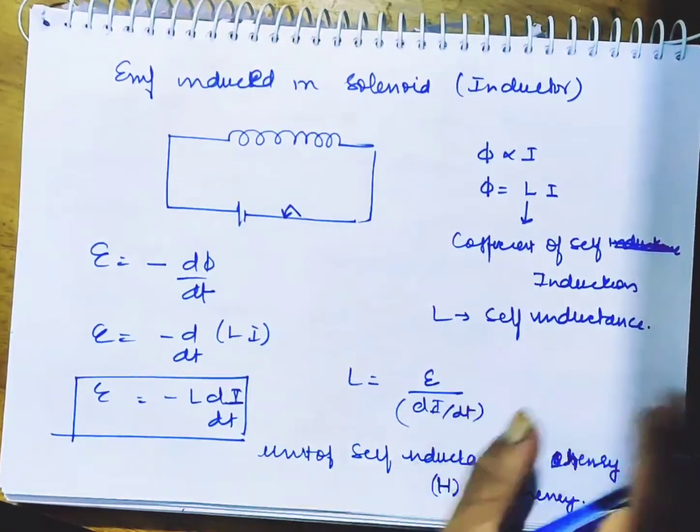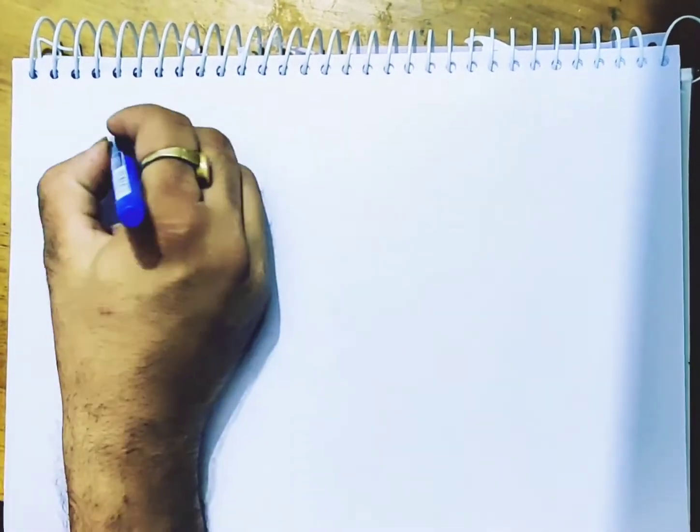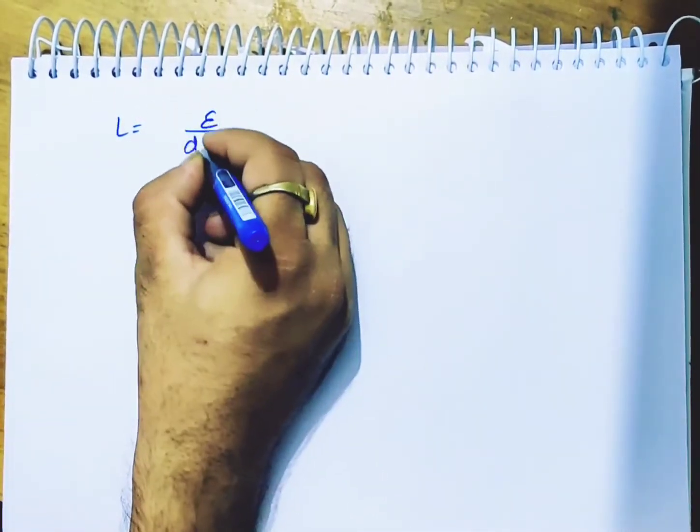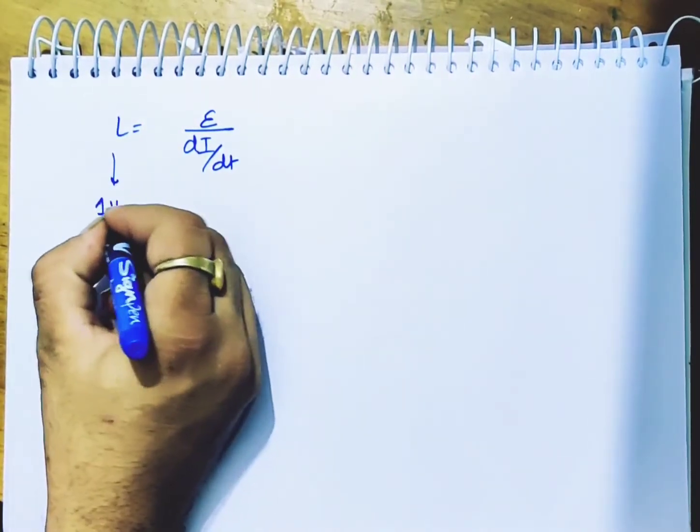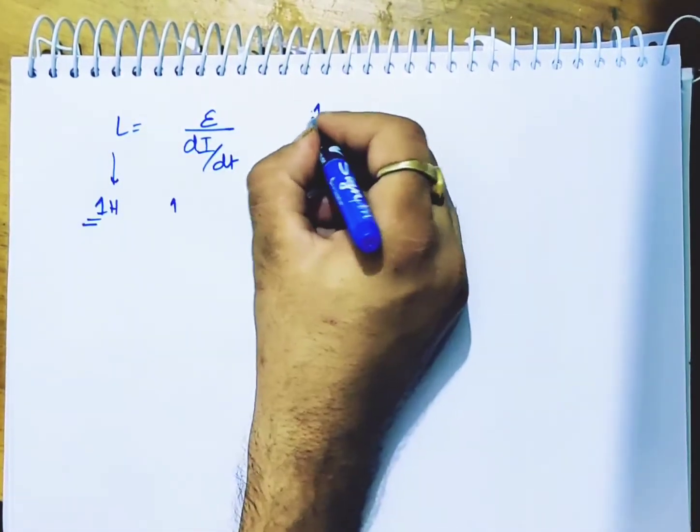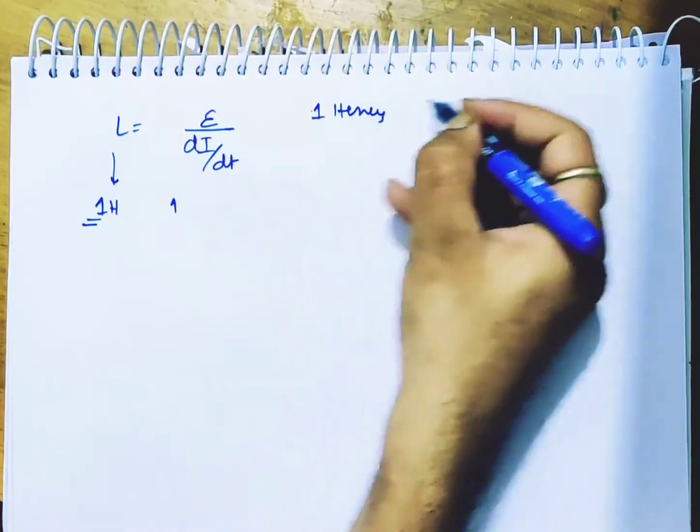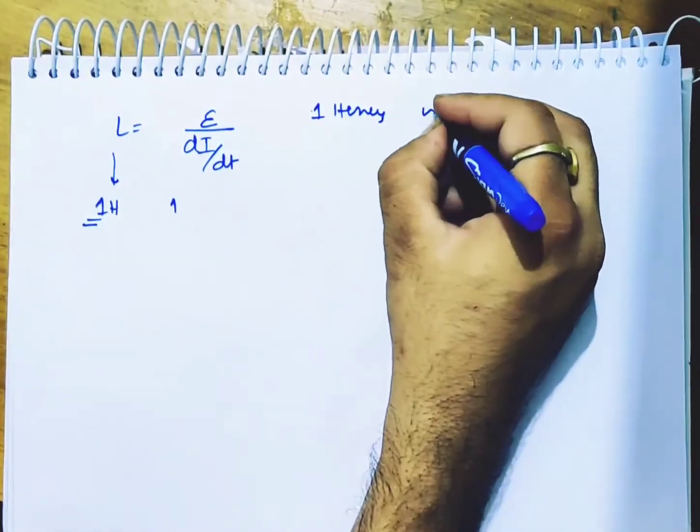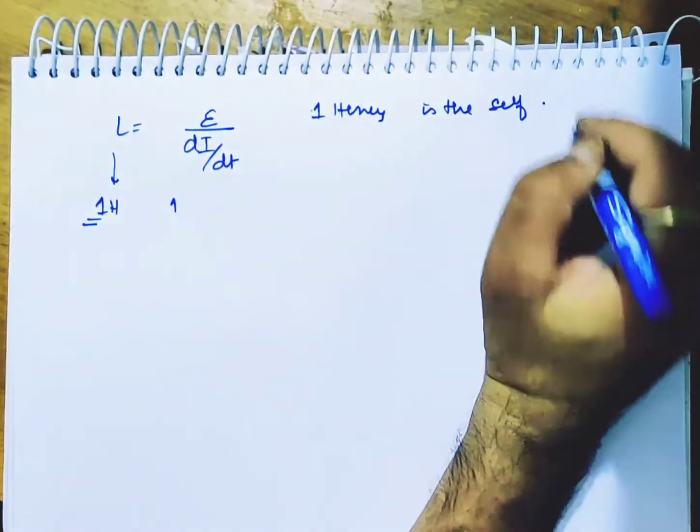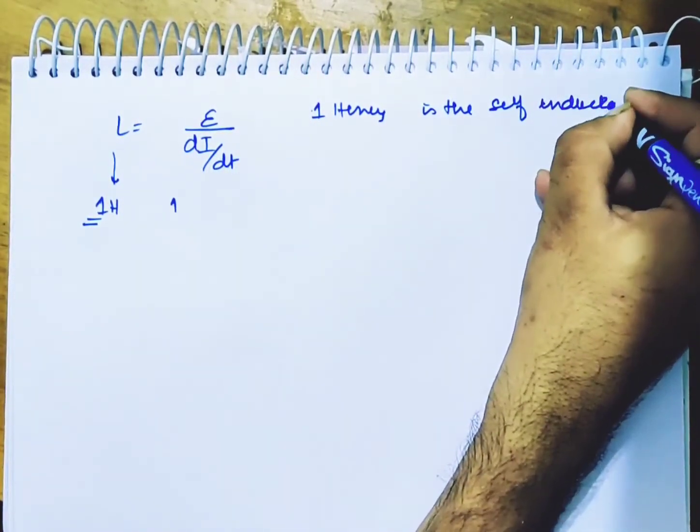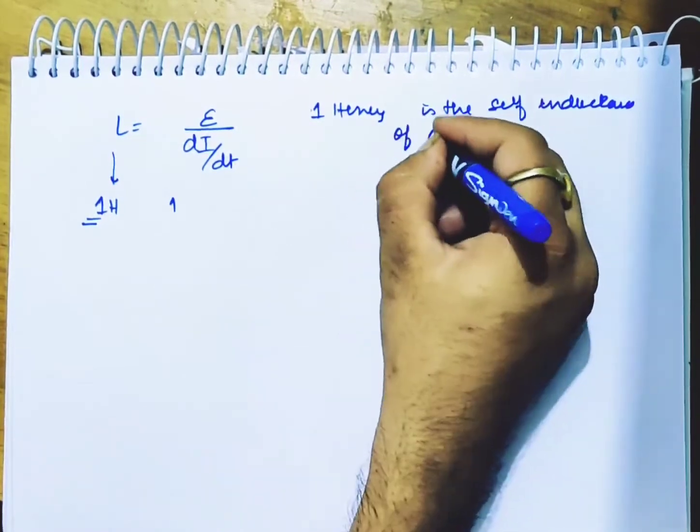Now let's define it. How am I going to define it? L equals ε divided by di/dt. If this is 1 Henry, how will you define 1 Henry? Very important, it comes in exams. 1 Henry is the self-inductance of a circuit,